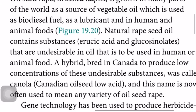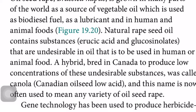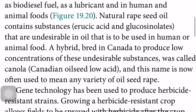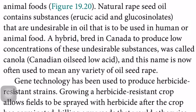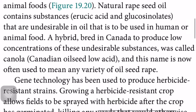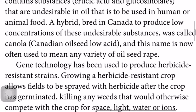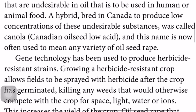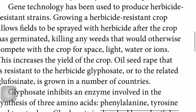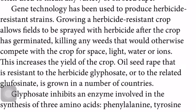Oil seed rape is grown in many parts of the world as a source of vegetable oil, used as biodiesel fuel, a lubricant, and in human and animal foods. The natural oil contains erucic acid and glucosinolates that are undesirable in food. A hybrid bred in Canada to produce low concentrations of these undesirable substances was called canola. Gene technology can delete the genes producing those undesirable products, making the oil healthier.